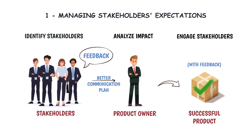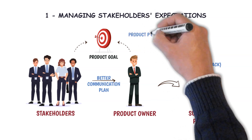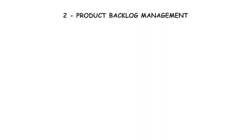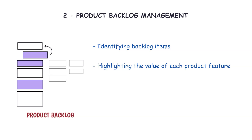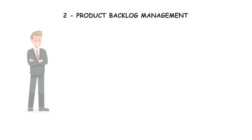The product owner works closely with the stakeholders to create a product goal and business objectives. Then they develop a product roadmap and define product priorities in alignment with the product strategy and business objectives. Second, product backlog management — it includes identifying backlog items, highlighting the value of each product feature, helping the Scrum team understand the importance of these features, and sequencing them based on value, risk, size, and dependency.